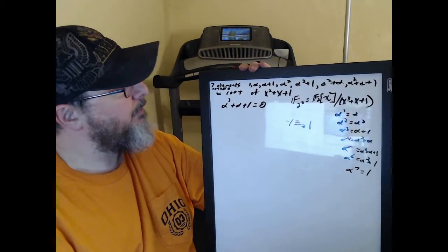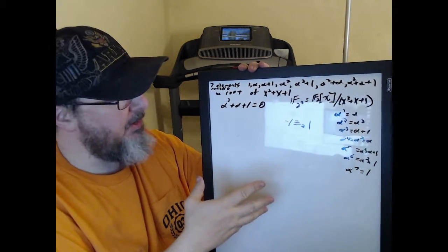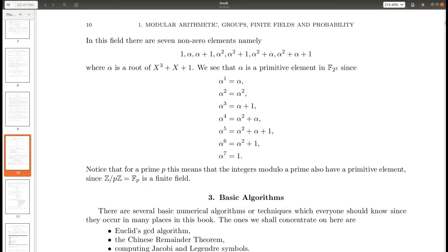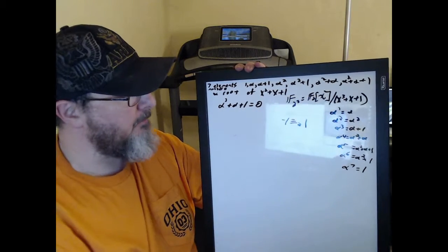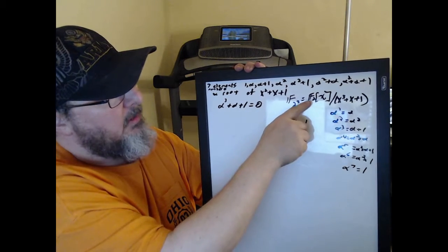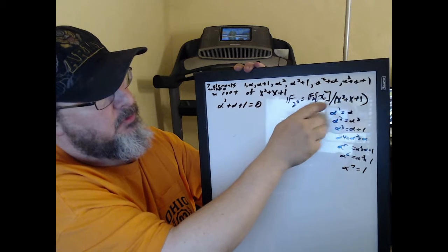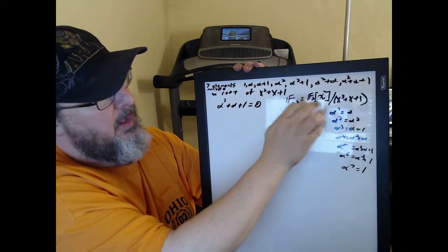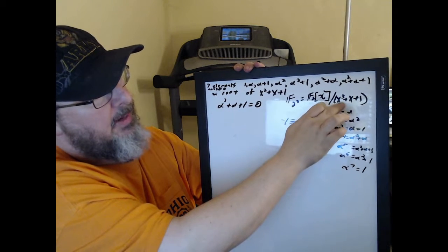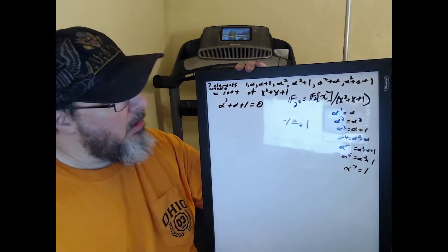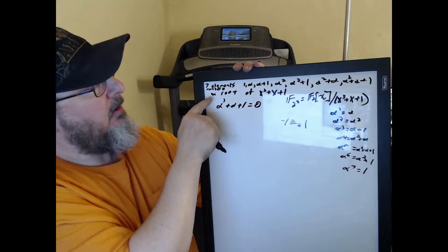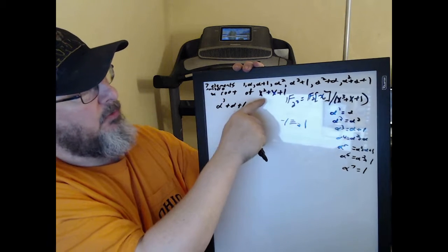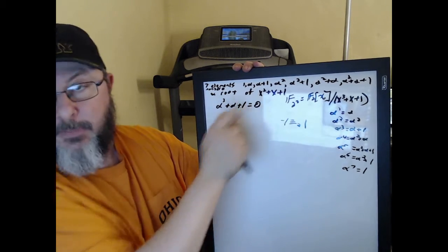So in the book, on page 10 — I'll flash a picture on the screen — he has F sub 2 to the third, and he defines that as F sub 2 bracket x polynomials modded out by x cubed plus x plus 1. So he says alpha is a root of x cubed plus x plus 1.